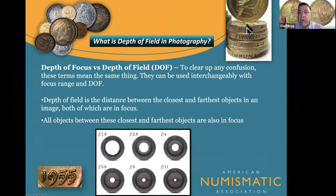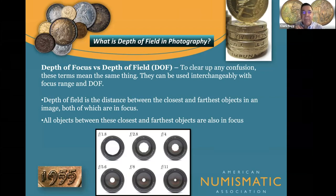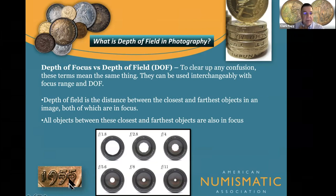When doing macro photography, there's very little depth of field — you have to remember that. It's not like shooting a mountain view where the depth of field is enormous and everything looks beautiful. That depth of field reduces quite a bit when you're taking close-up shots.